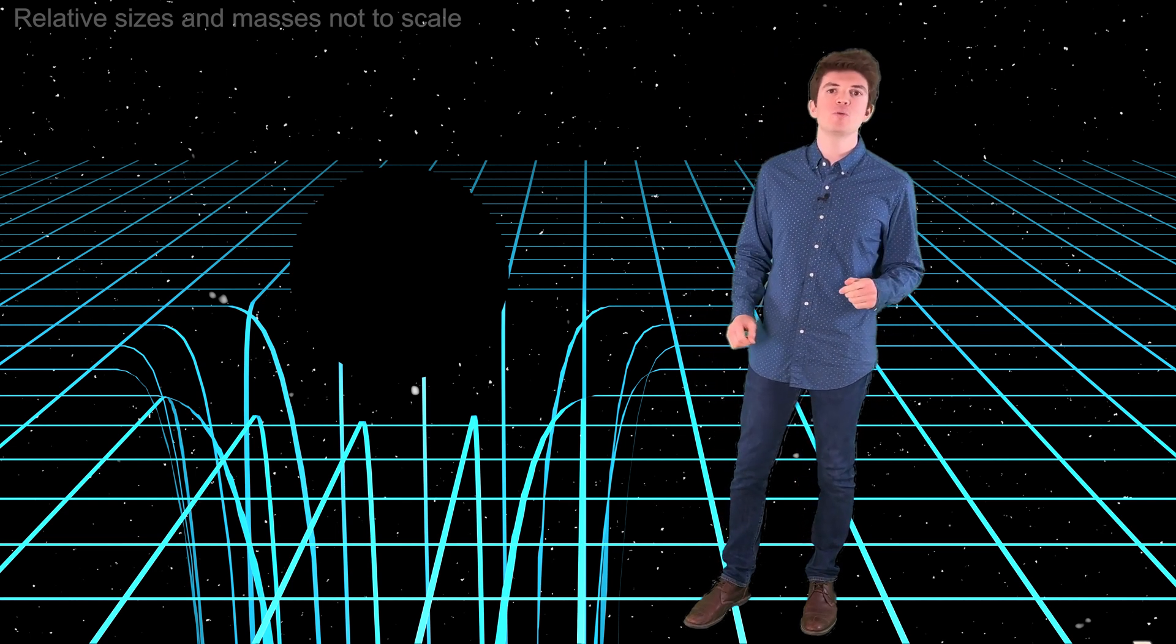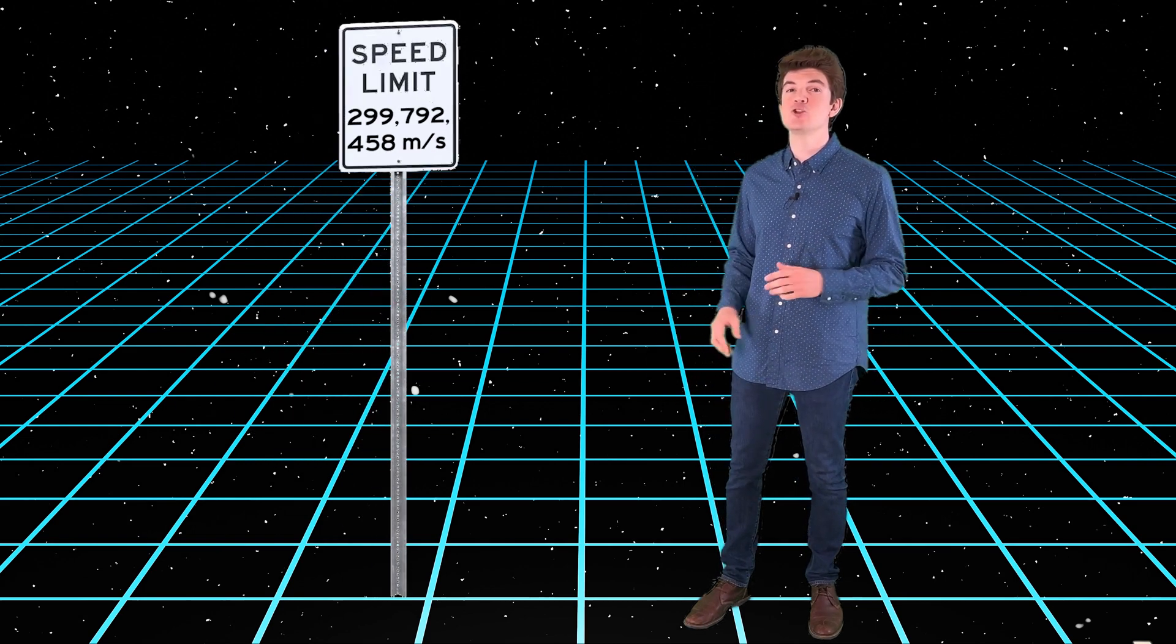Now, before we start making gravitational waves in our 2D universe, we need to talk about one more property of space-time. Both our universe and this 2D universe have a speed limit. That speed limit is the maximum speed at which information can travel. The speed of information in our universe is about 300 million meters per second. You, and I, and everything we interact with on a daily basis travels way slower than that speed limit.